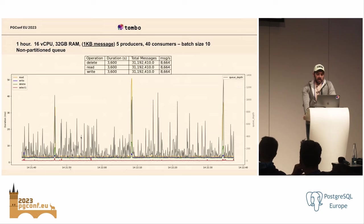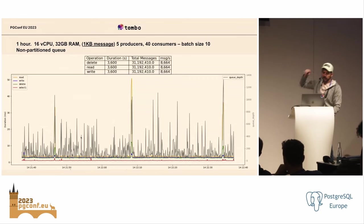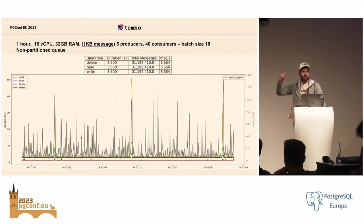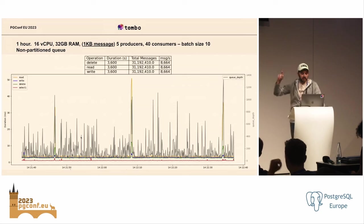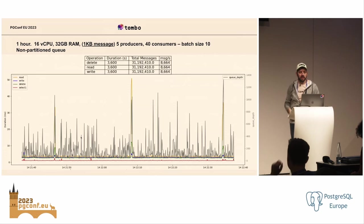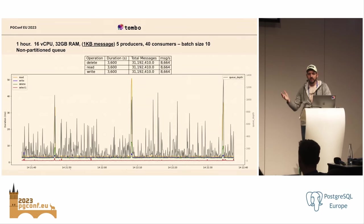Another one-hour benchmark — the only difference is we increased message size to one kilobyte. We do see a little more variation. The gray lines show queue depth — if we were producing messages faster than we can consume them, the queue depth would go up. During this benchmark we were consuming at roughly the same rate we were producing. This also looks fairly healthy — we don't see degradation in performance over time over a one-hour period for 1 KB messages.